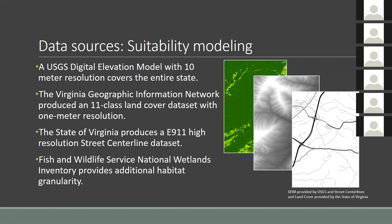Digital elevation models will represent elevation and be used to derive slope and aspect. The USGS is currently producing a LiDAR-derived 1-meter dataset, but it is not yet available throughout the state, so the analysis will rely on a 10-meter elevation model also produced by the USGS. Land cover will be represented with a 1-meter resolution dataset created by the state of Virginia, classifying 11 different types of land cover. The state also produces a street centerline dataset that will be relied on heavily for representing threats from roads. Finally, the National Hydrography Dataset and the National Wetlands Inventory offer additional ways of representing wetlands and water sources, which are crucial habitat for many amphibians and reptiles.